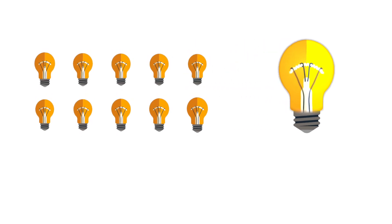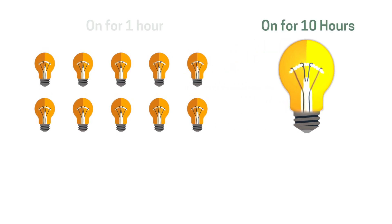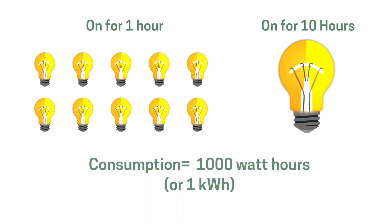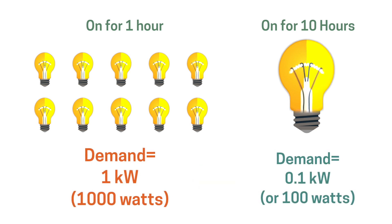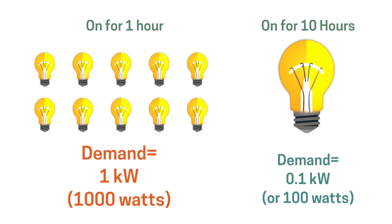Whether we have a single 100-watt light bulb running for 10 hours or a bank of 10 100-watt bulbs running for 1 hour, our consumption is the same—1 kilowatt hour or 1,000 watt hours. The bank of 10 100-watt light bulbs, however, demands 10 times more electricity from the utility than a single 100-watt bulb does. So even though the electrical consumption is the same in these two cases, the demand is much different. Simply put, the bank of 10 100-watt bulbs demands more energy from the utility.